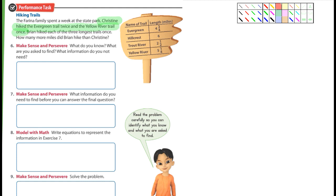Well, I suppose I could highlight the Evergreen and the Yellow River. And then it says Brian hiked each of the three longest trails once. Well, you're going to have to figure out which of the three longest trails, which three trails are the longest. They give you four. Three of them are the longest, and that's what Brian hiked.